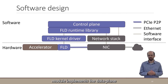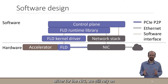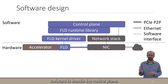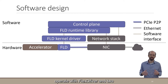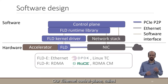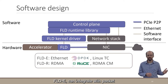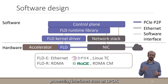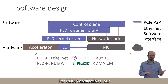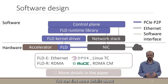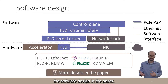While the FlexDriver hardware module implements the data plane driver for the NIC, we still rely on software to handle the control plane. We designed a software stack that configures the NIC to operate with FlexDriver and provides two versions of its control plane. Our Ethernet control plane called FLDE can integrate with packet processing interfaces such as DPDK and Linux TC (traffic control). For RDMA applications, our FLDR control plane integrates with RoCE and RDMA-CM. You can find more details about the software design in the paper.